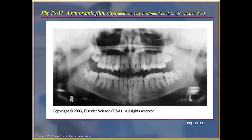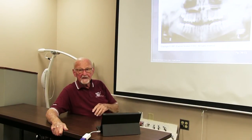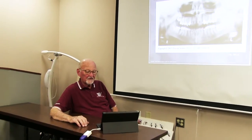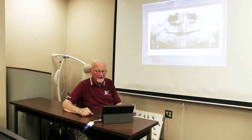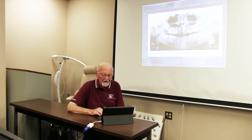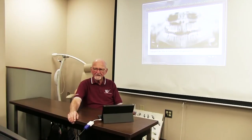In children, we frequently will do the panoramic film looking for the eruption of different teeth. This patient has a third molar on all four quadrants that appears sometime in the future will not have enough room and will probably need to be extracted — those wisdom teeth. It gives us the position of all the different teeth, any extra teeth, cysts, tumors, malignancies, etc. So the panoramic serves a very useful position in dentistry, but by itself it is not complete.